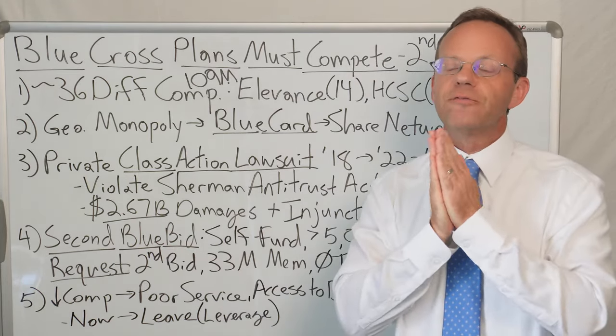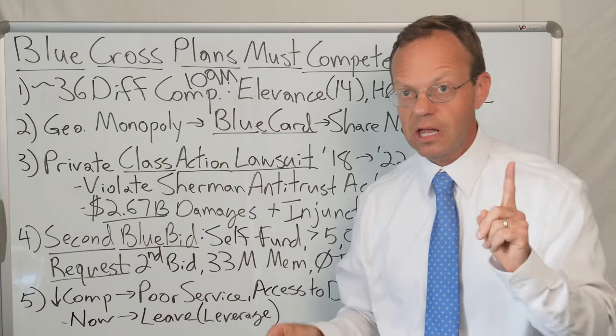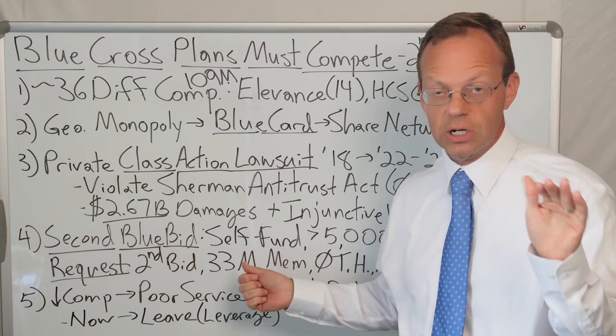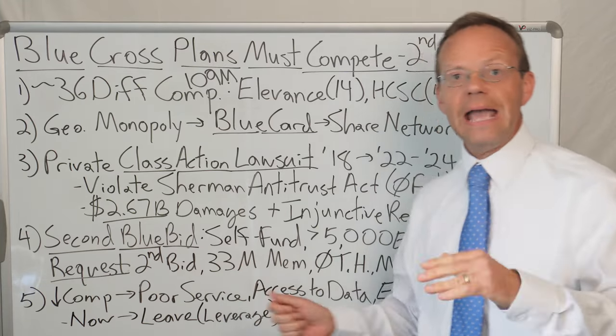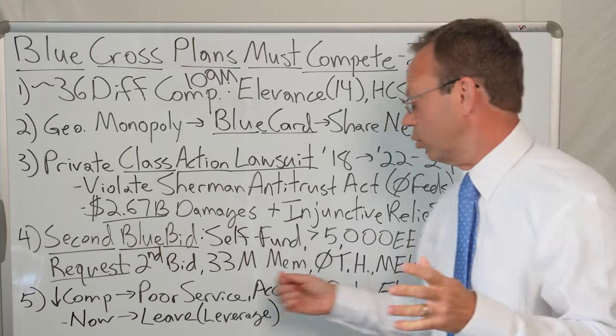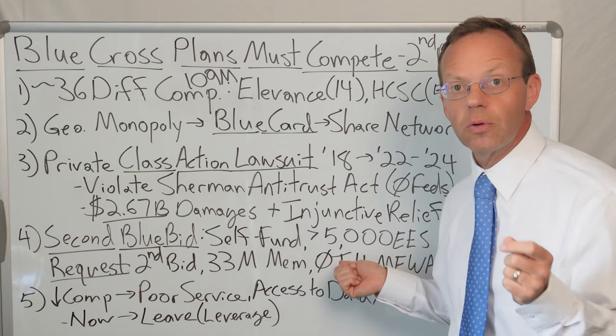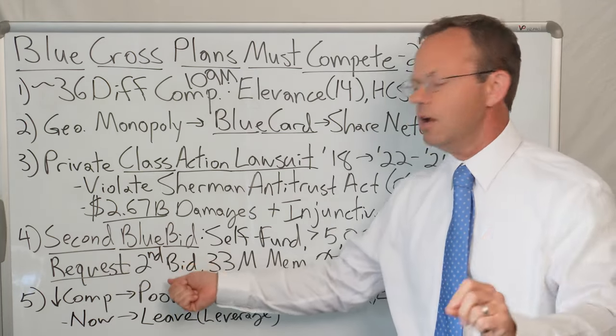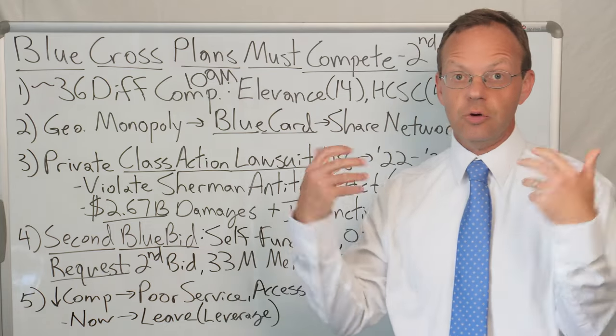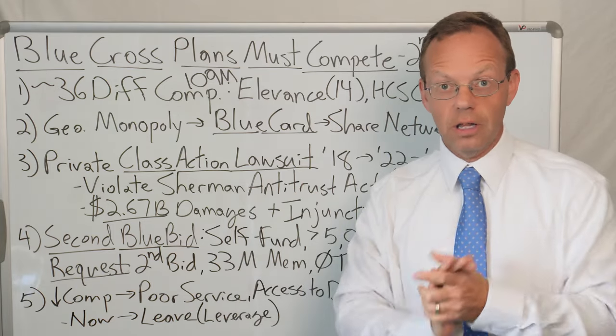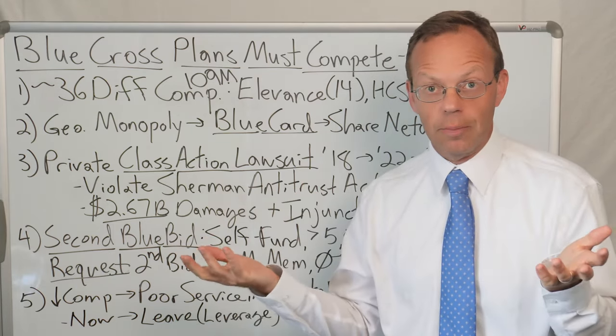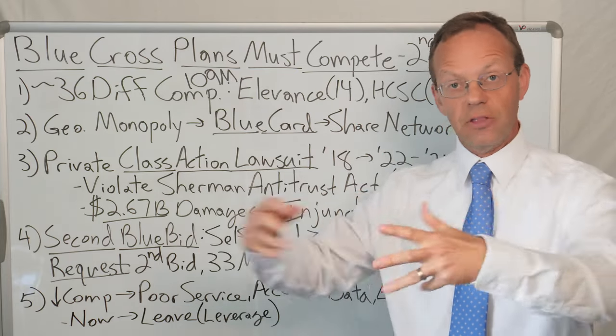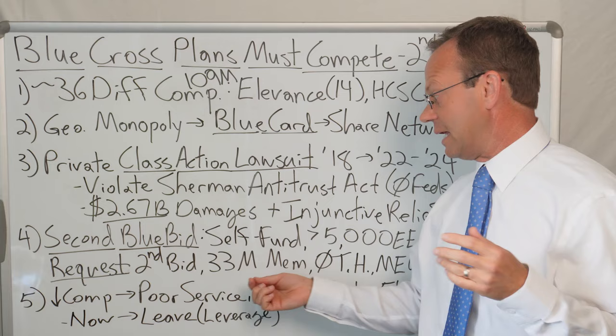Now, this is not available for all employers that use Blue Cross. It's only available for self-funded employers that are using Blue Cross for Administrative Services Only, ASO, and it's only for very large self-funded employers that have more than 5,000 employees, where those employers can request a second competitive bid from another Blue Cross plan. So now, if you're that employer in Illinois and you don't like the Illinois Blue Cross plan, you can go out and you can request a bid from another state's Blue Cross plan.